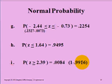which is 0.9916. Then we must subtract it from 1, because this value is a probability it is to the left of 2.39, and we want the probability that it is to the right of 2.39.